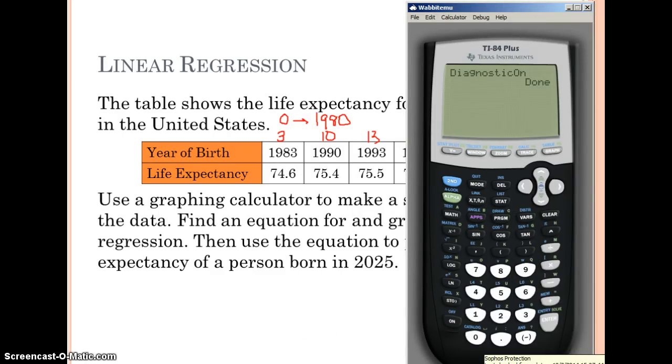We're going to go to stat, then click enter for edit. We're going to type in our L1 and L2. L1 is going to be our year and L2 is going to be our life expectancy. Remember for L1 we're doing 3, 10, 13, 17, 20, and 23. Once you have those typed in, we're going to look at our graph.